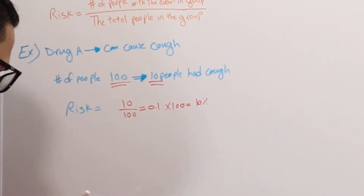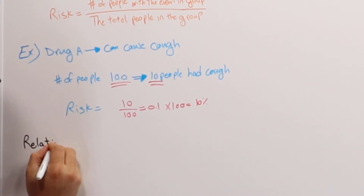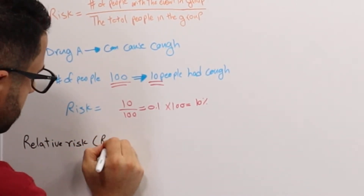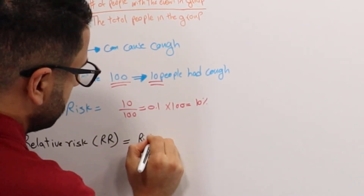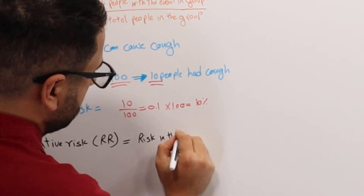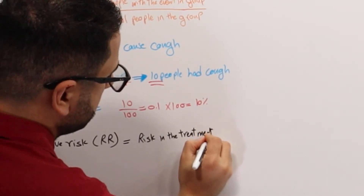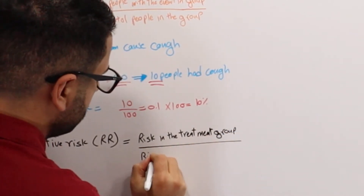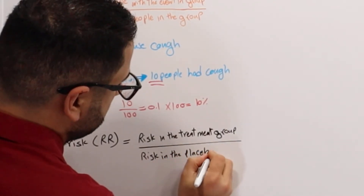So that's what risk is. Now, what is relative risk? Relative risk — or RR — is basically the risk in the treatment group over the risk in the placebo group.